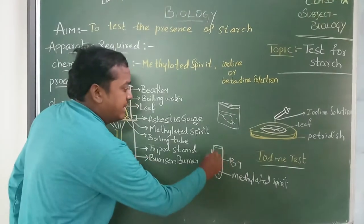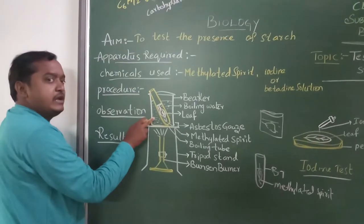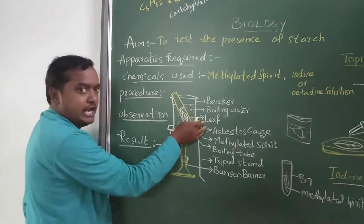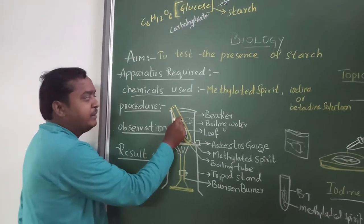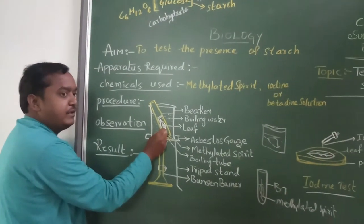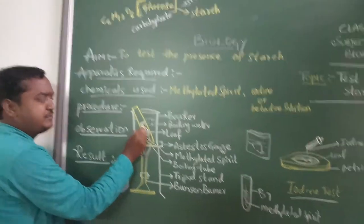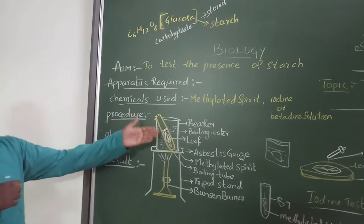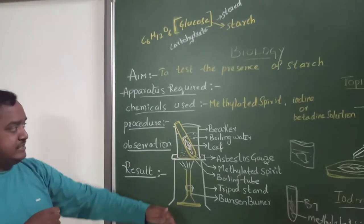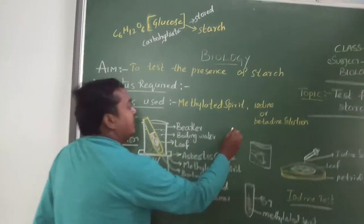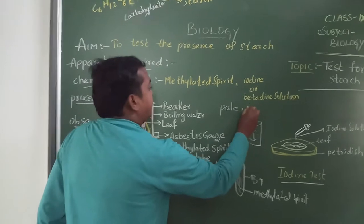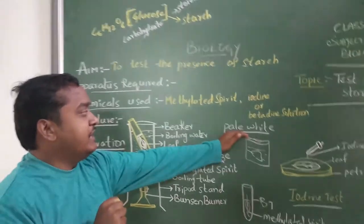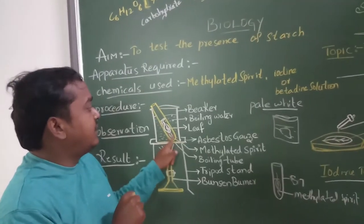Then place this entire setup — the boiling tube containing the leaf in methylated spirit — back into the boiling beaker of water, which is already boiling. After a few minutes, take out the leaf. You will see it has turned a pale white color.